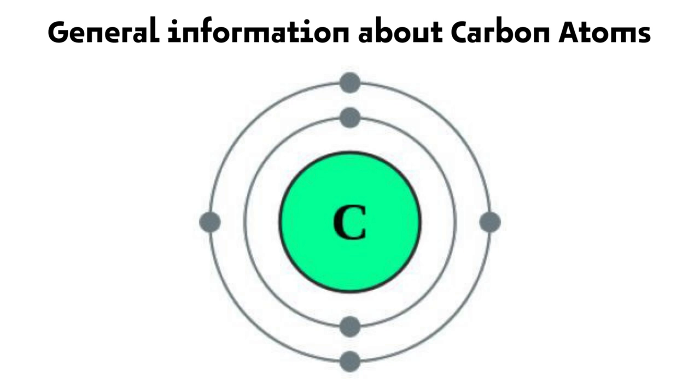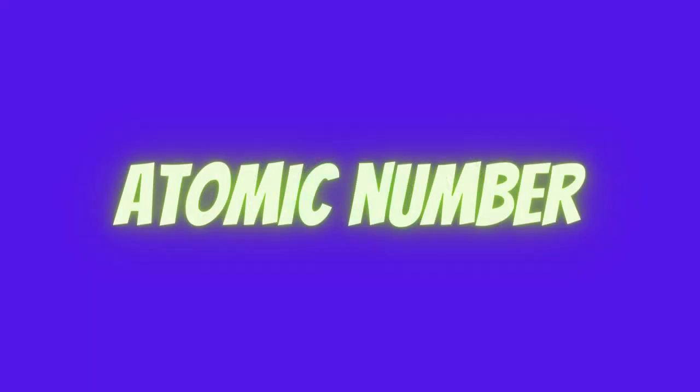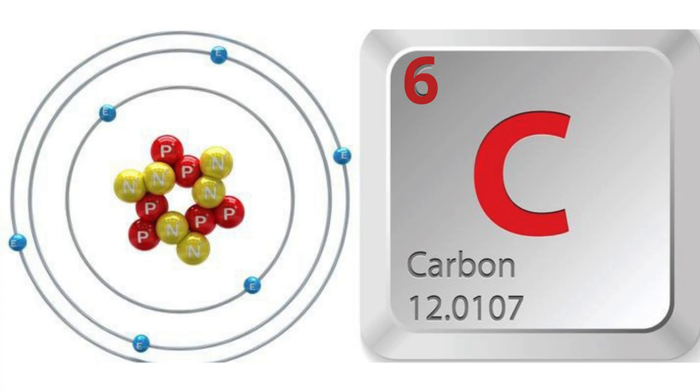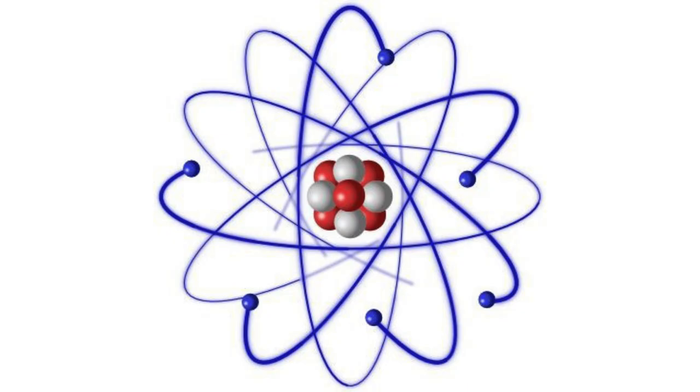General information about carbon atoms. Atomic number. Carbon has an atomic number of six, which means it has six protons in its nucleus.